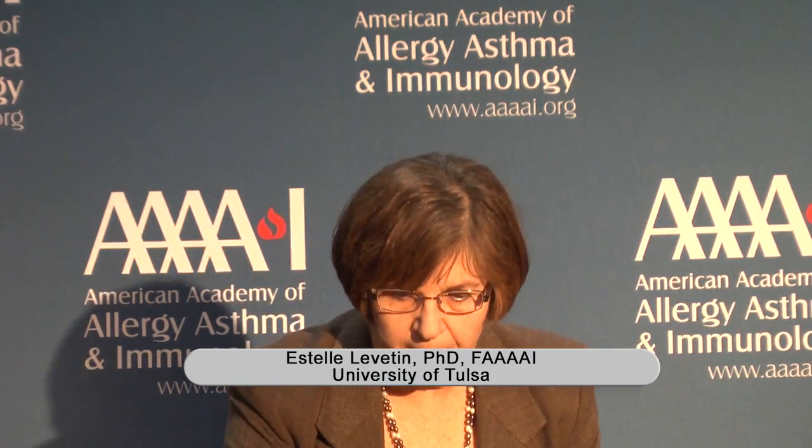As we move on into late spring and early summer, we enter the grass pollen season. Grasses also have small, inconspicuous flowers and produce large numbers of airborne pollen grains. And again, you can see the airborne pollen on this image.